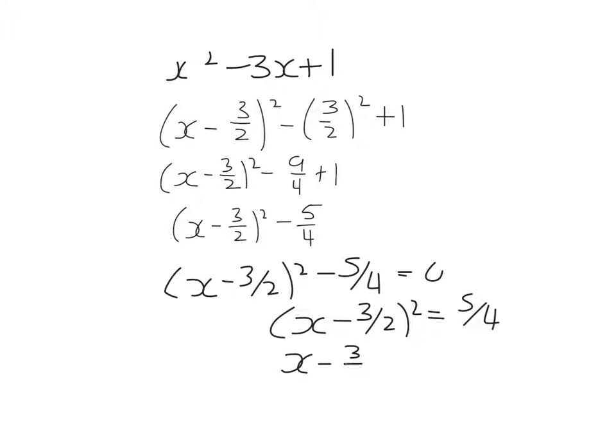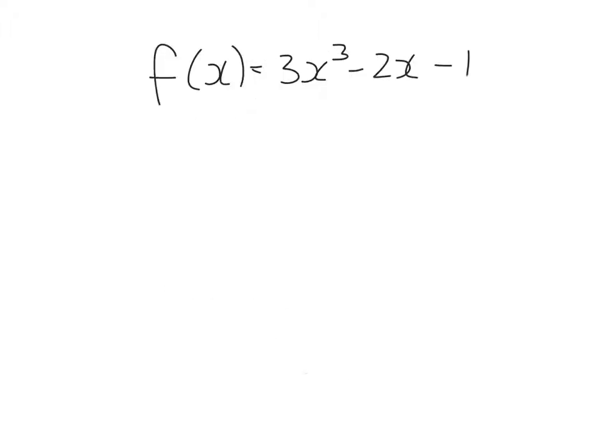So x minus three over two equals plus or minus square root of five over two, which means that x is three over two plus or minus root five over two. We're going to use the factor theorem here to try to find a factor.